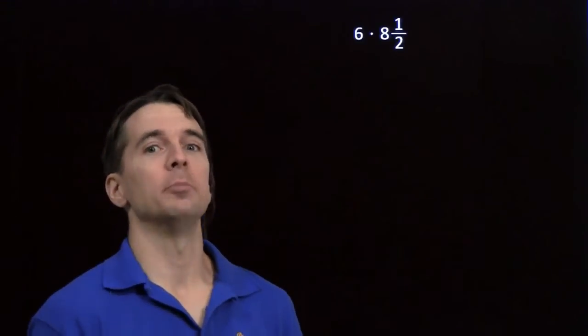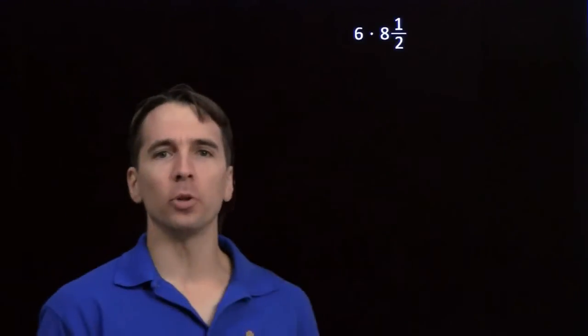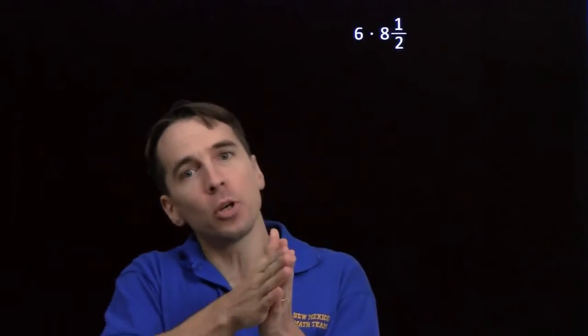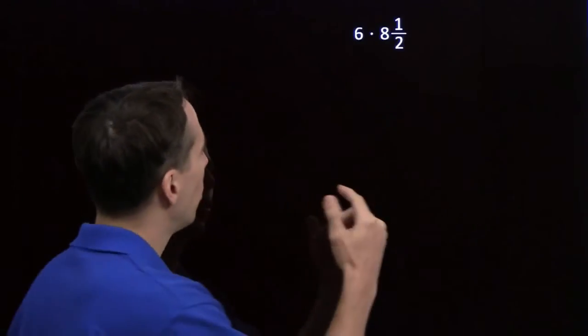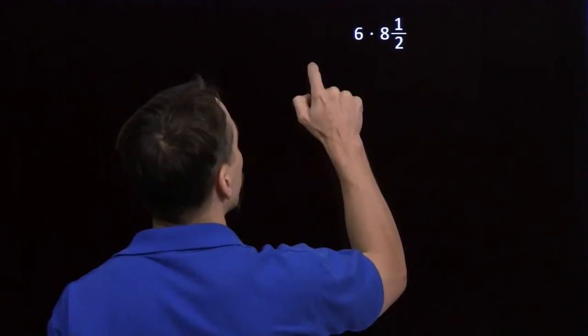Now that we know how to add and subtract mixed numbers, let's try some multiplication. Back when we were adding and subtracting, we took our mixed numbers and broke them into an integer part and a fractional part. You know what we do when we find something that works, we keep on doing it. So that's what we're going to try here.